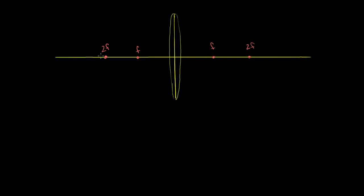Let's first put an object out here that's more than two focal lengths away from the lens. When we dealt with parabolic mirrors, we talked about the distance of two focal lengths being the center of curvature — over here we're just going to call it two focal lengths. So let's figure out what the image of this thing will look like as the light from it gets refracted through this lens.